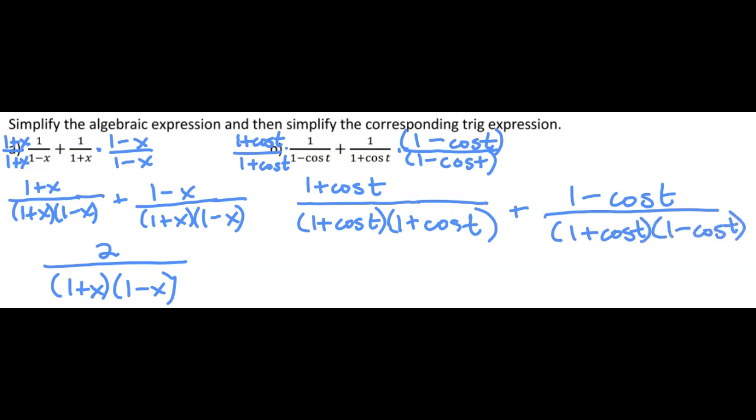And now that the denominators are the same, we can go ahead and add the numerators. So just like before, I'm going to get the one plus one is two. But then kind of nicely, I'll get a cosine t plus a negative cosine t. So that will actually drop out completely. So I just get two over one plus cosine t times one minus cosine t.